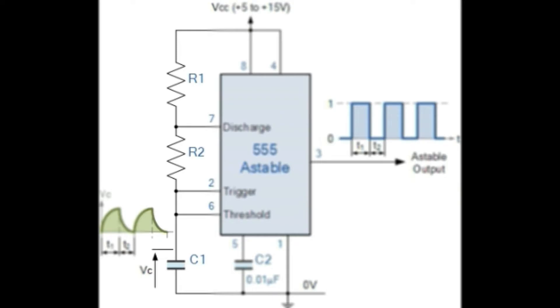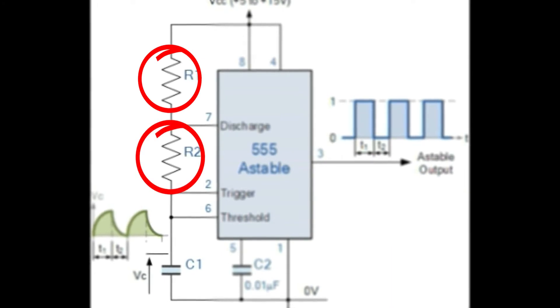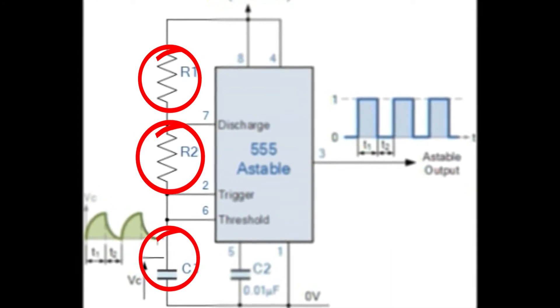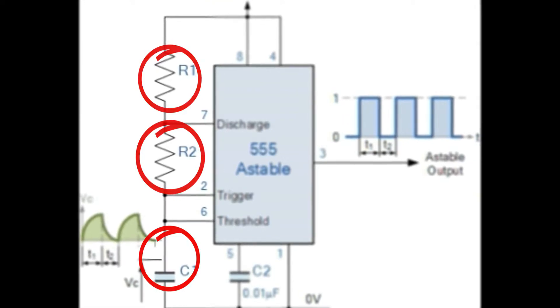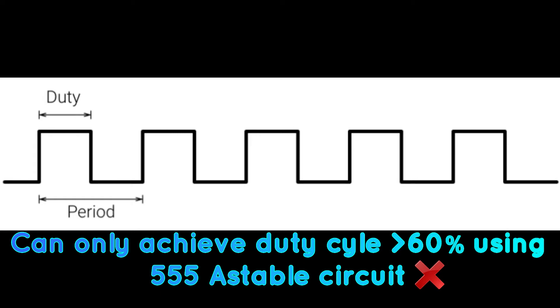In order to do this we need to fix the values of R1, R2 and C1 appropriately to modify the charging and discharging times of the capacitor. This will decide the width of pulse. Unfortunately, no matter what value you choose, the duty cycle will not go less than 60 percentage when using IC 555.